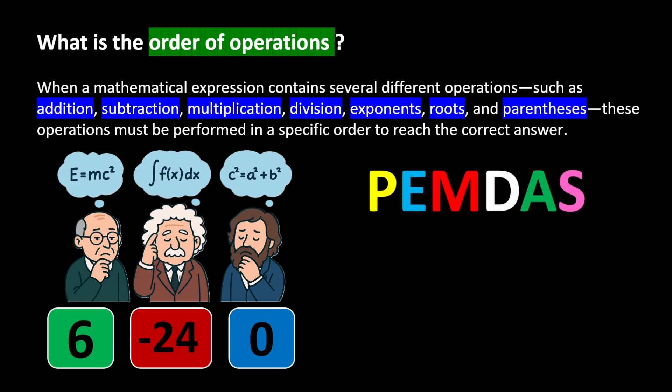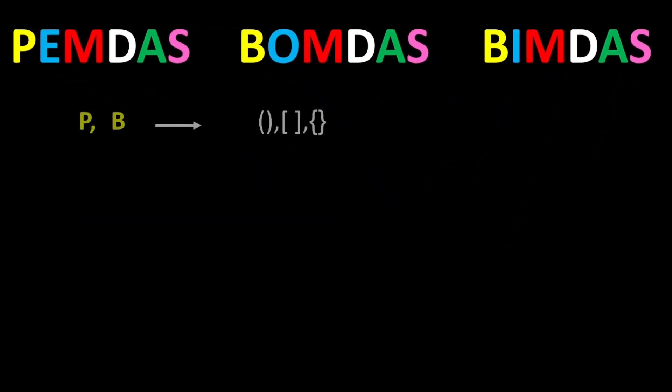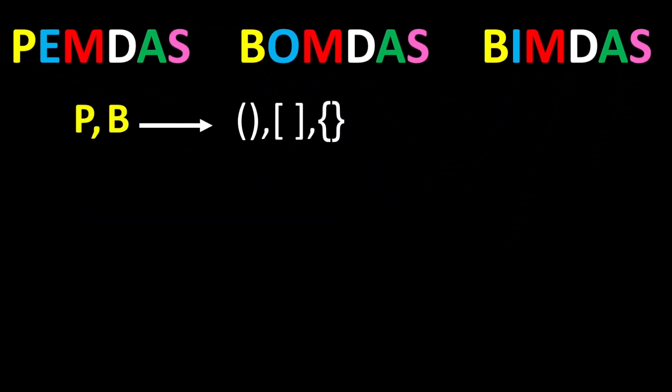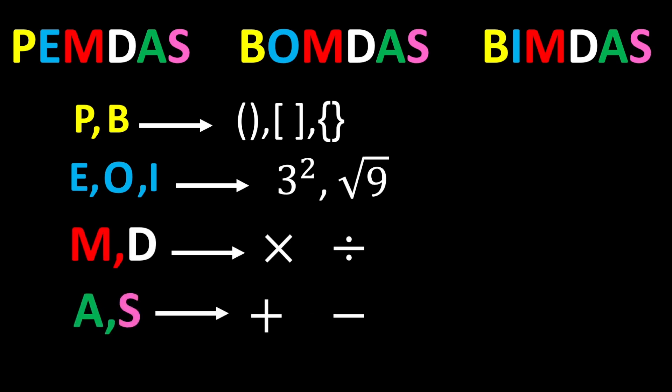In some countries, it is also referred to as BOMDAS or BIMDAS. P stands for parentheses, and B stands for brackets. E stands for exponents, while O stands for orders, and I stands for indices. M and D stand for multiplication and division, and A and S stand for addition and subtraction.